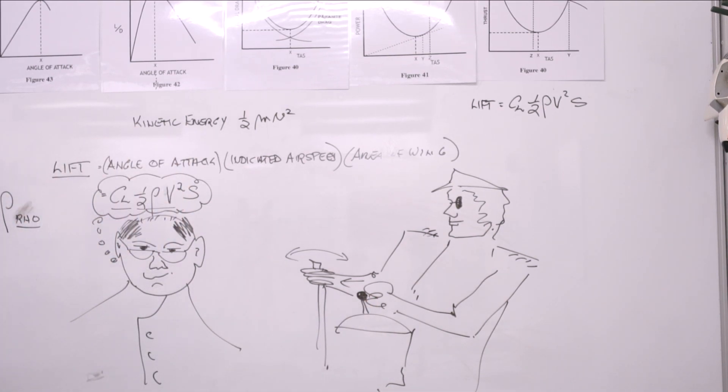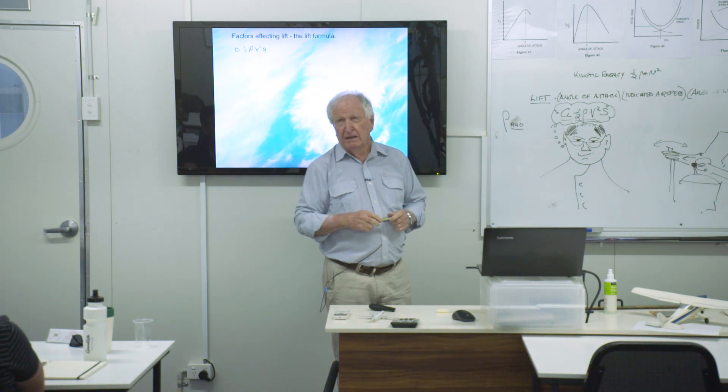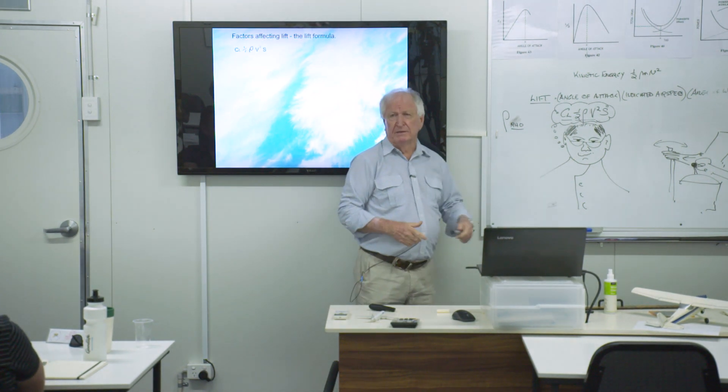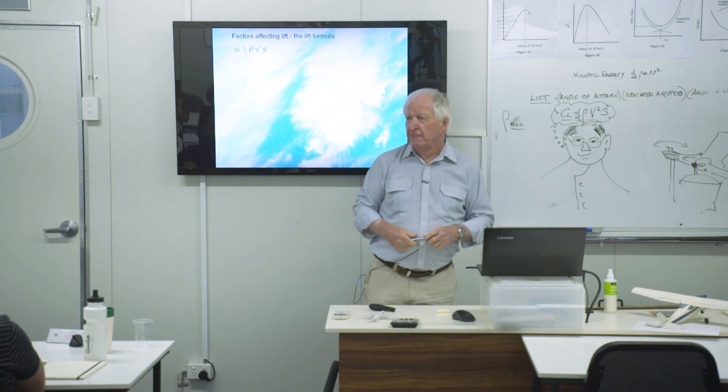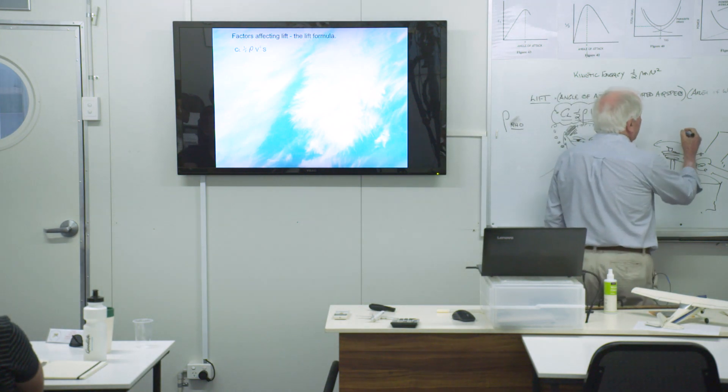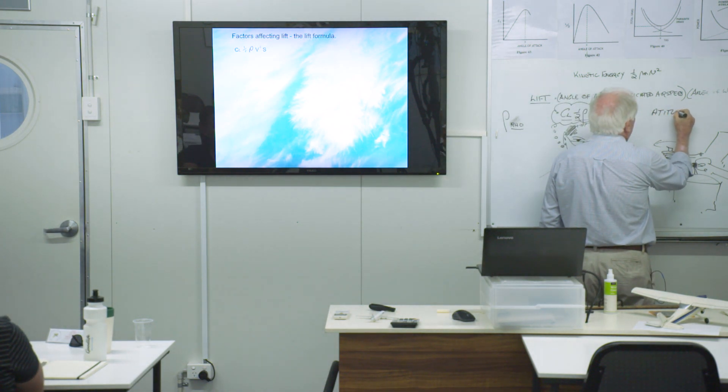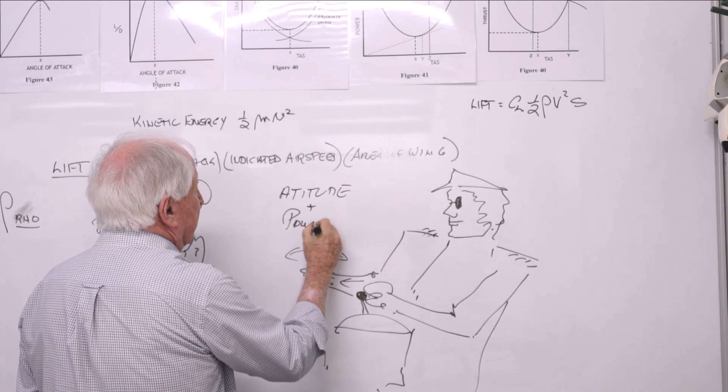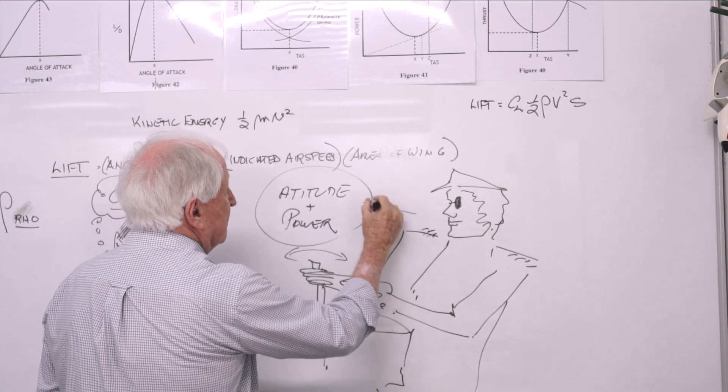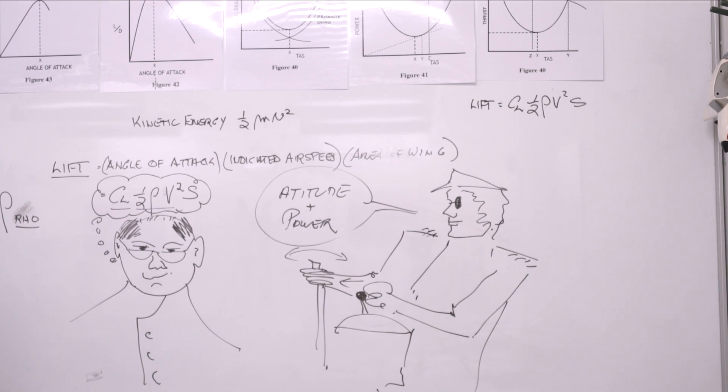So how does he make lift? Now if you ask Percy, how do you make lift, Percy? This guy says lift is CL, half-rho V squared S. But Percy says lift is nose attitude and power. Now when you think about it, they're both right. This guy's being an academic. This guy's being practical. But really, this throttle decides what half-rho V squared is. That decides how fast you fly. And this joystick controls the angle of attack. So they're both saying exactly the same thing.